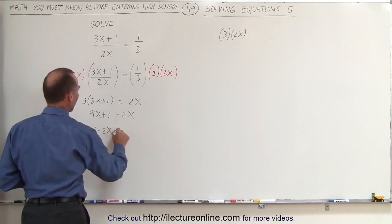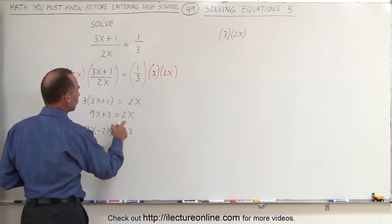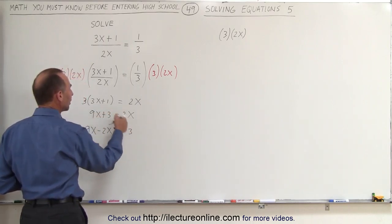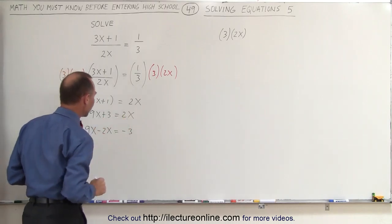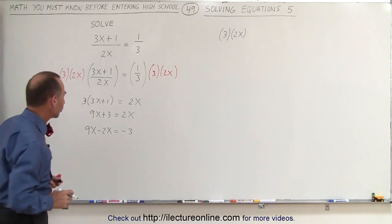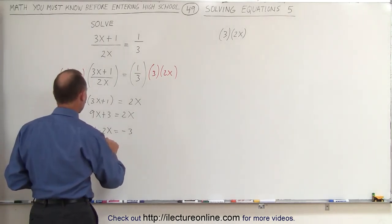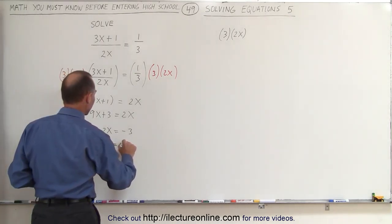9x minus 2x must equal negative 3. Notice when you move anything across the equal sign, the sign changes, in this case from a plus to minus, and from a plus to minus. Now, combining like terms, 9x minus 2x is 7x, and that equals negative 3.